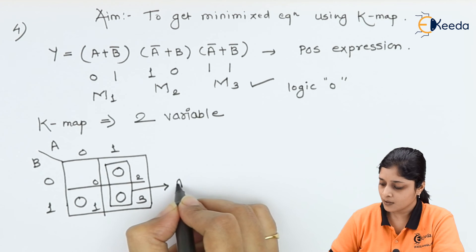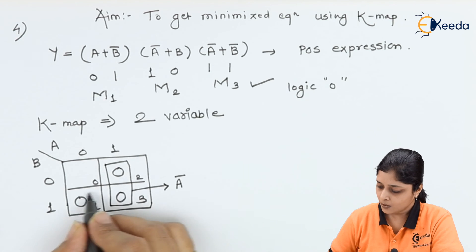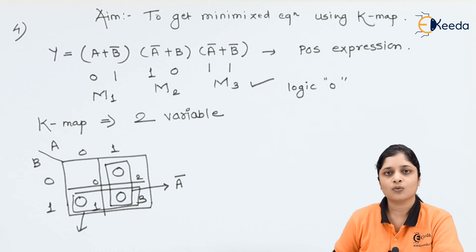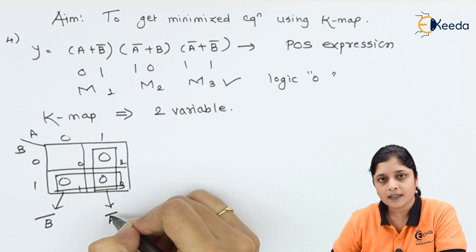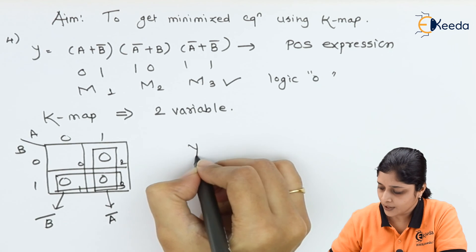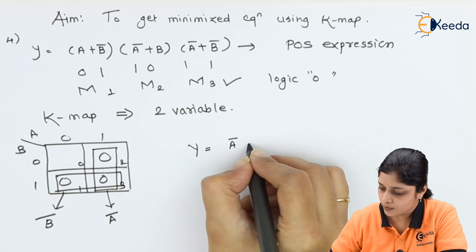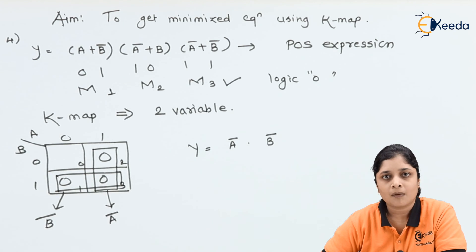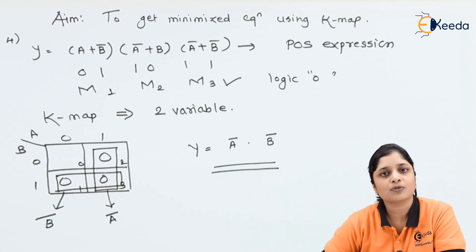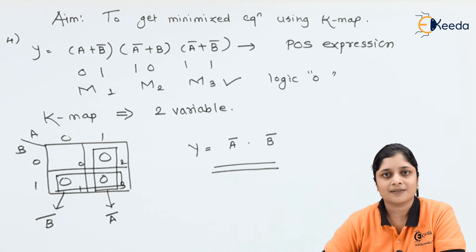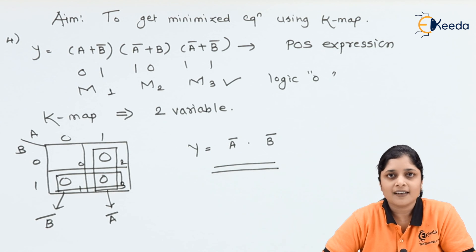We can make a group of two zeros. From this grouping we get A̅, and for the other group we get B̅. So the final minimized answer is Y = A̅ · B̅. This is the minimized form using K-map rules on standard POS expressions. Thank you for watching — stay tuned with Ikeda and subscribe.